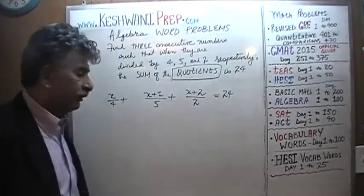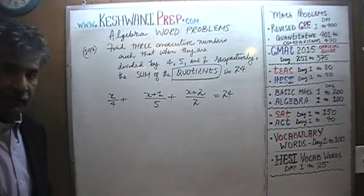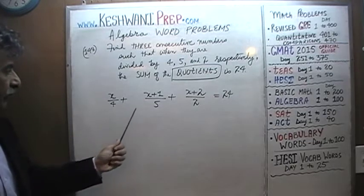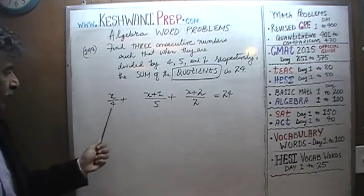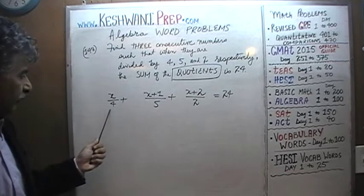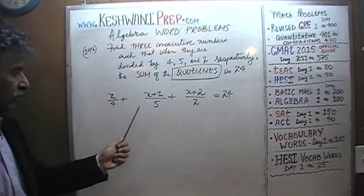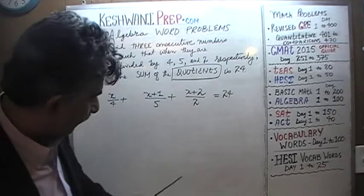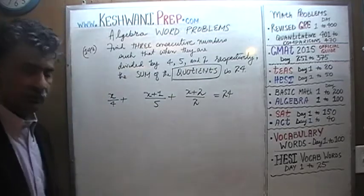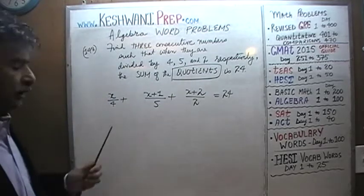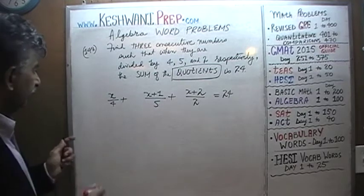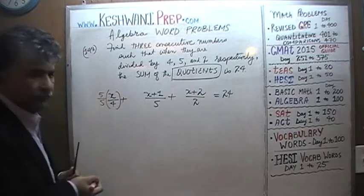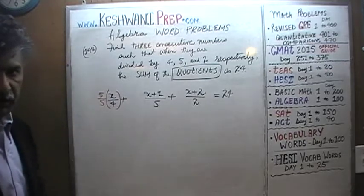The first thing we need to figure out is the common denominator — the least common multiplier. We have a 4, a 5, and a 2. It looks like 20 should work: we can divide 20 by 4, by 5, and by 2. So the common denominator here is 20.